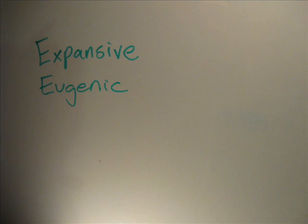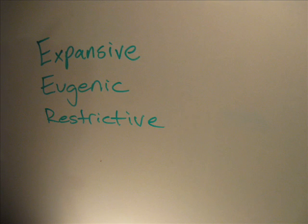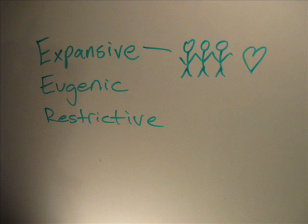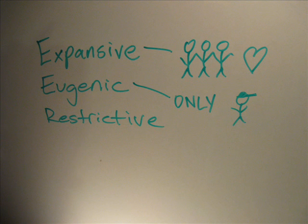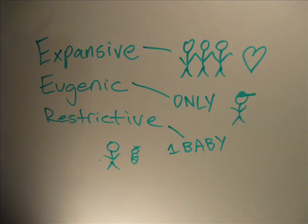How do governments affect population change? In population and government, there are three types of policies: expansive, eugenic, and restrictive. Expansive policies encourage large families and raise the rate of natural increase. Eugenic policies are designed to favor one racial or cultural sector of the population over others. Restrictive policies include examples like the one-child policy in China.